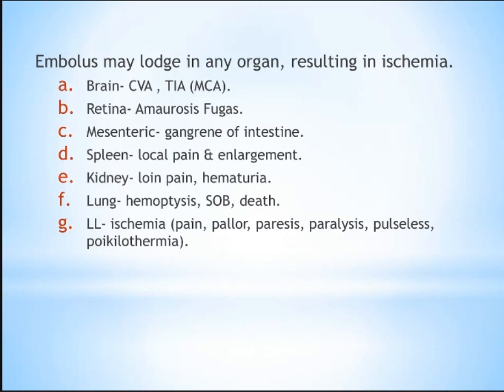The second most important tissue affected is muscle — most vulnerable to hypoxia after the nerve and skin. The last tissue affected by hypoxia is bone.